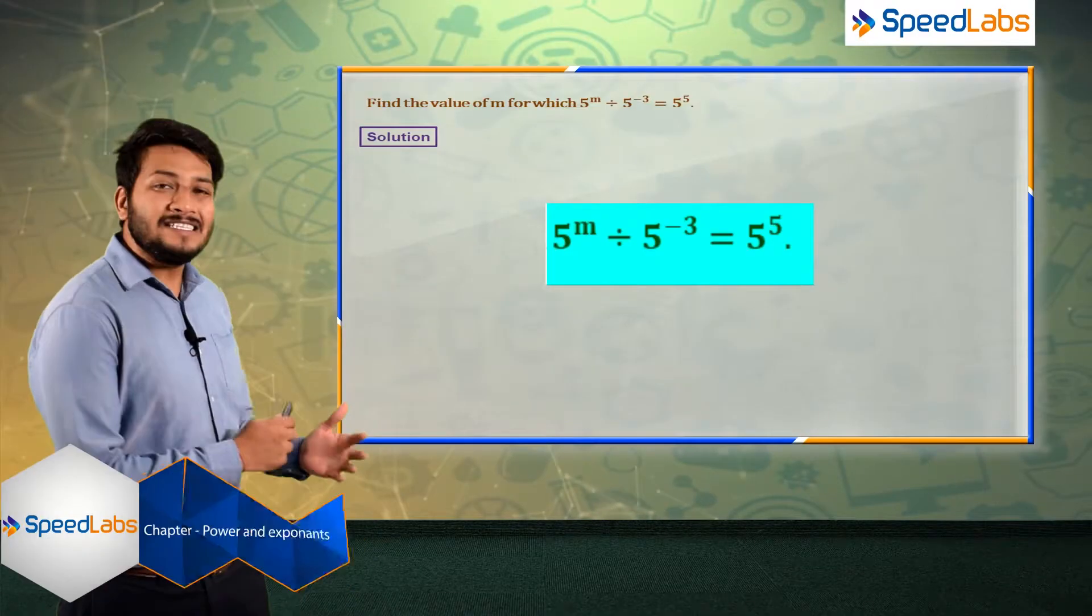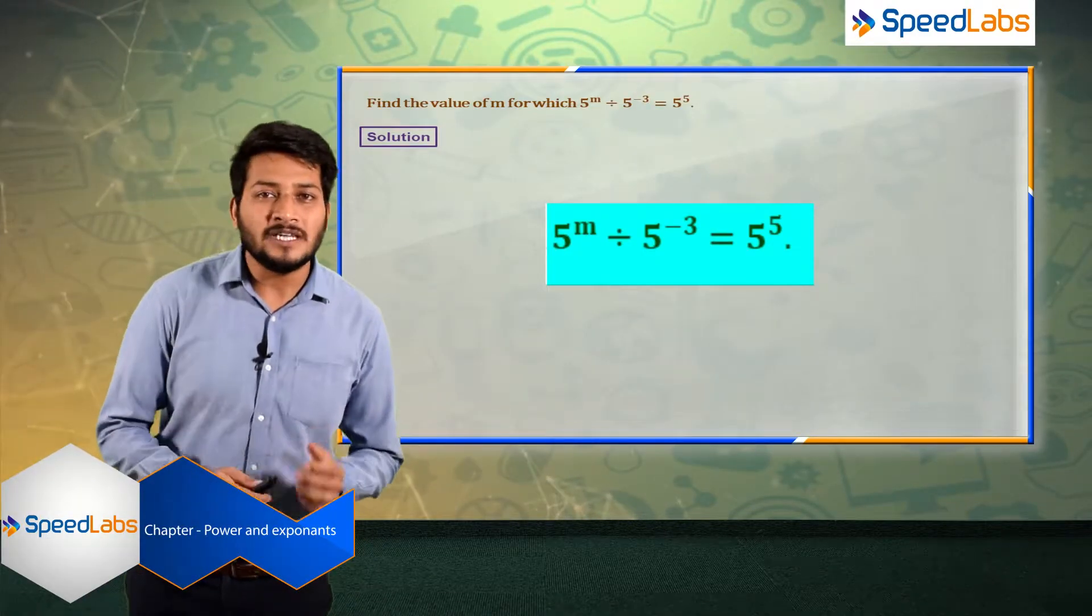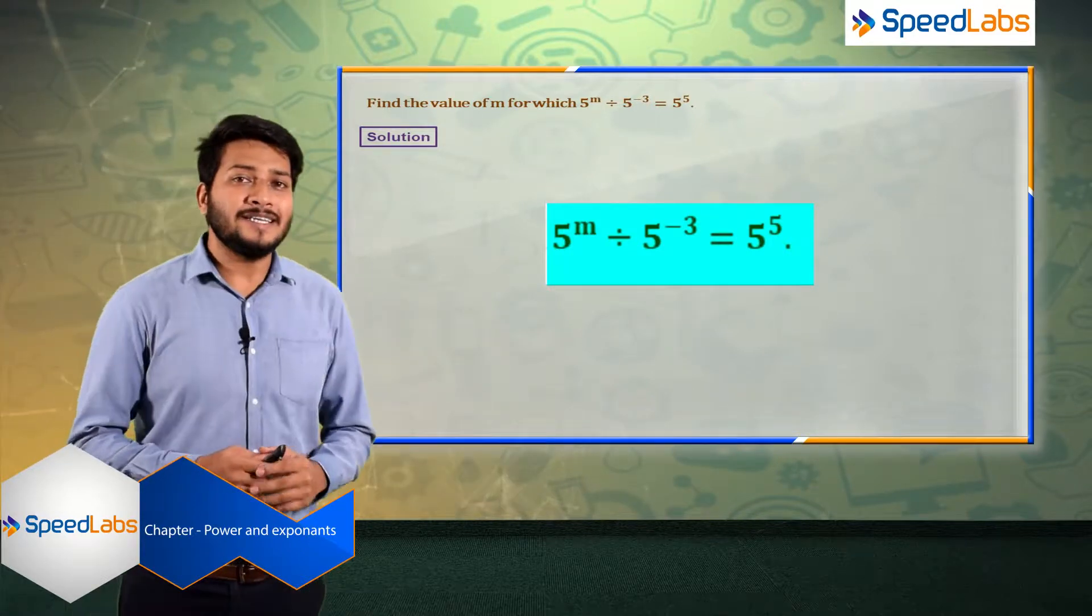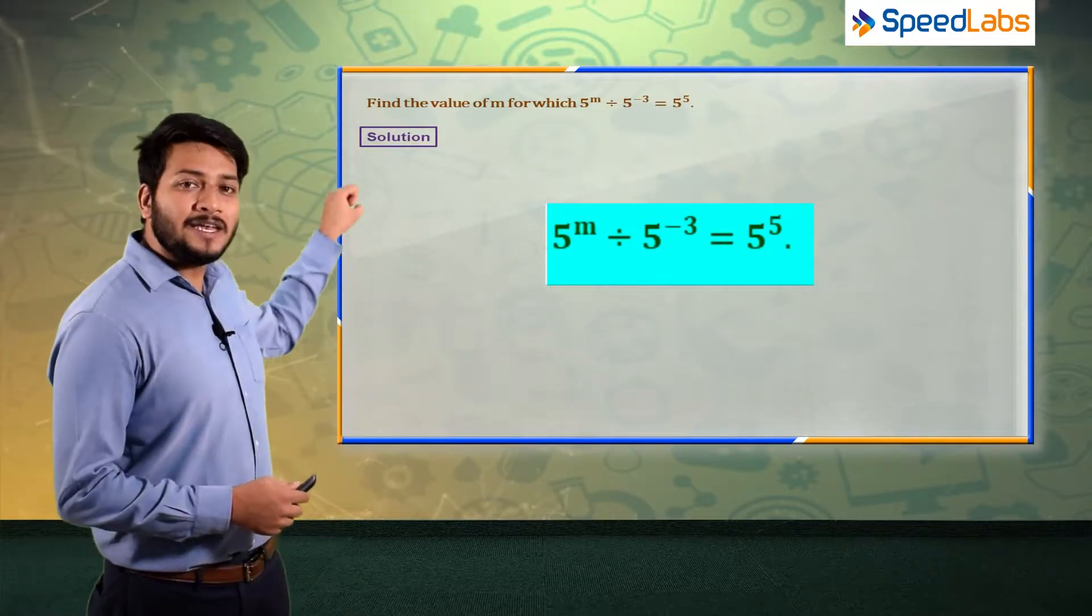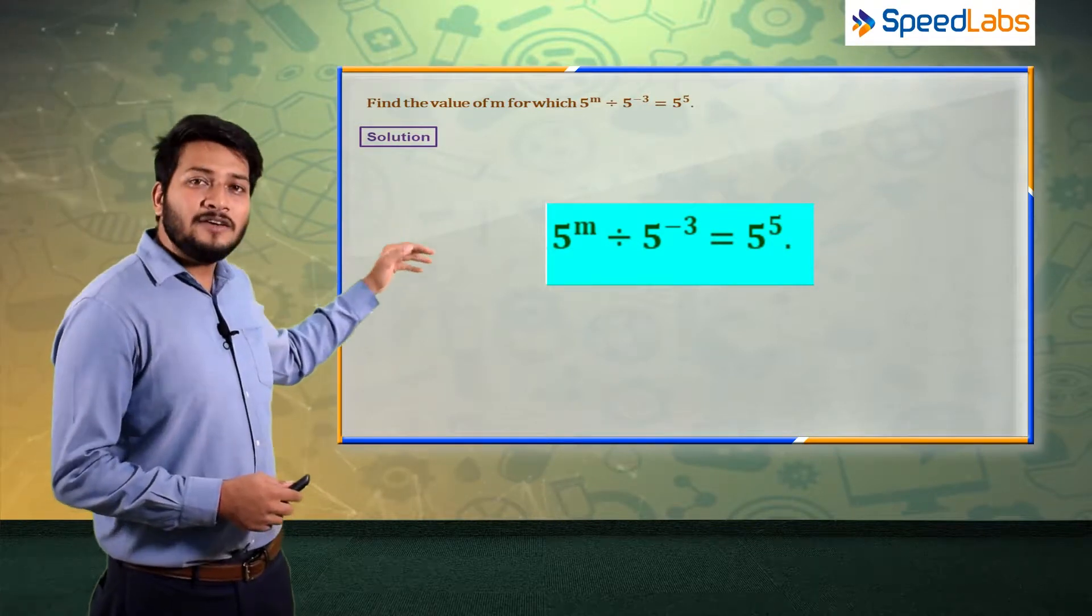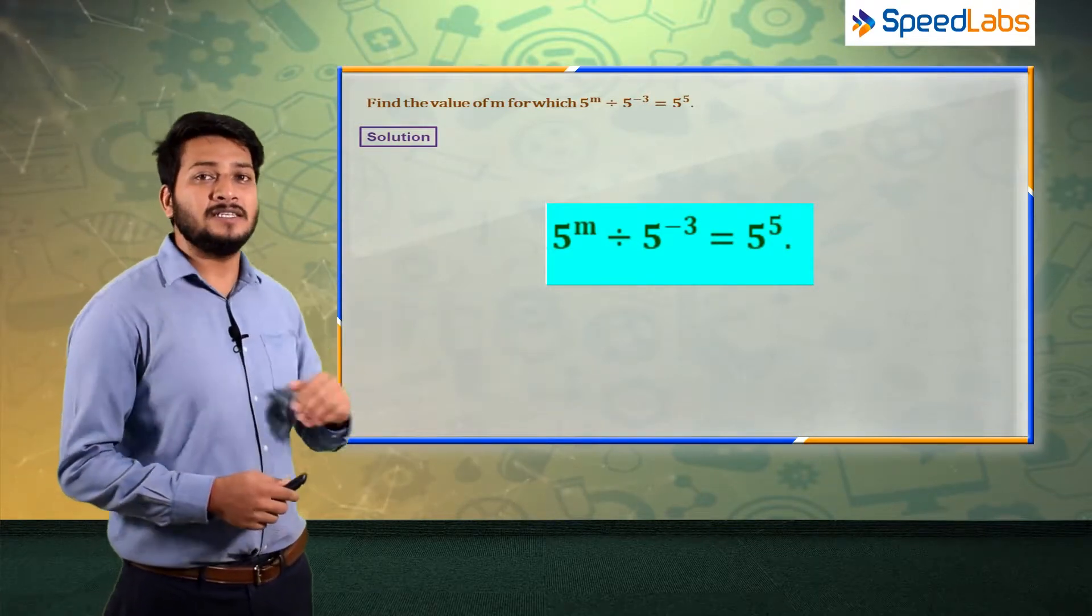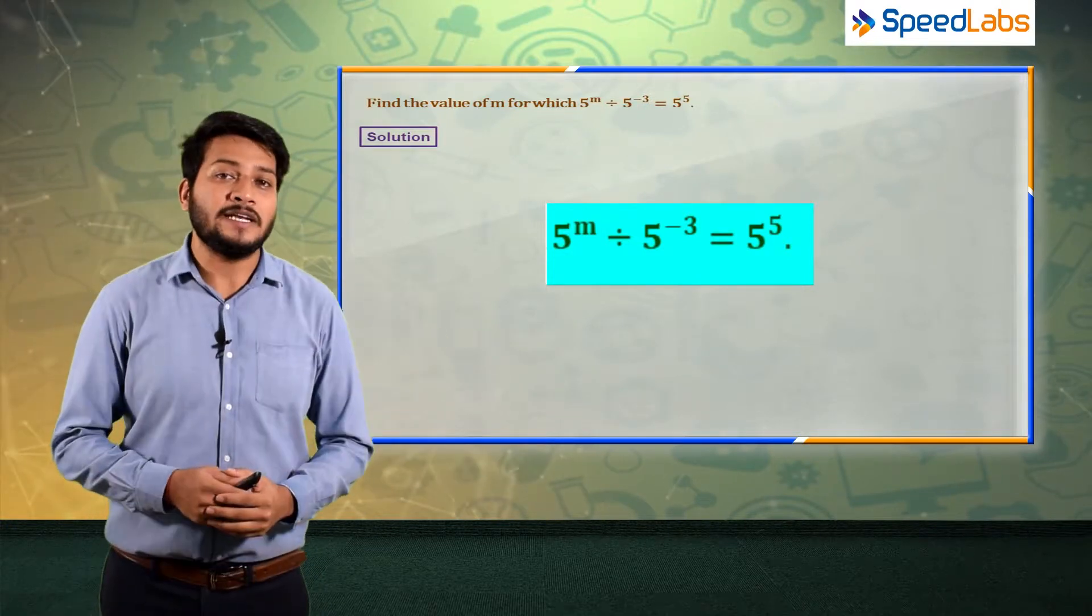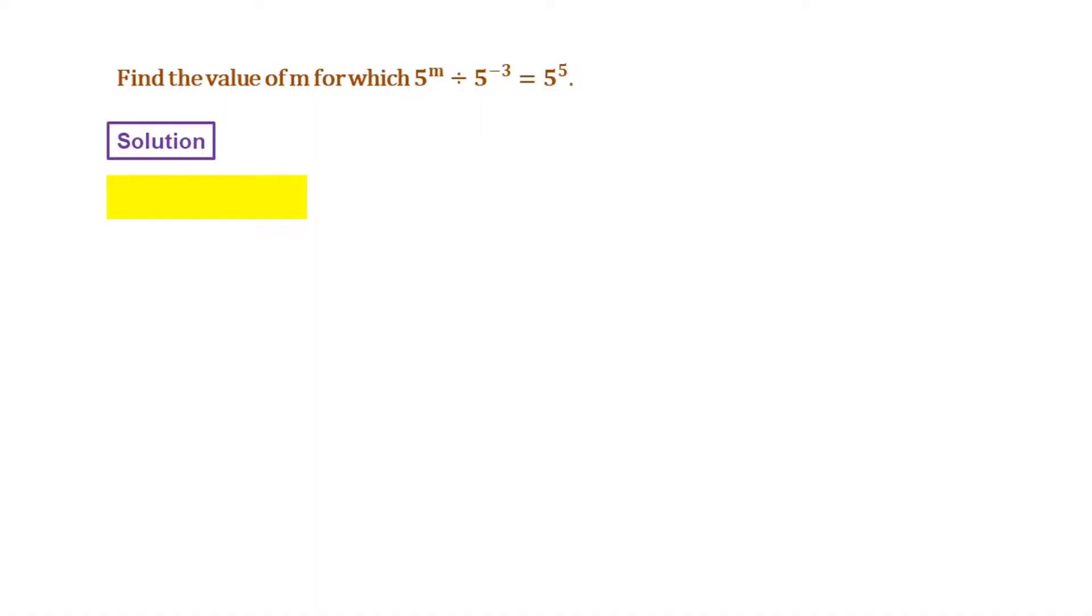Now again, a very simple problem based on the properties of exponents. In this problem it is given to you that 5 raised to the power m divided by 5 raised to the power minus 3 is equal to 5 raised to the power 5, and you are supposed to find out the value of m. So this is a very simple property.